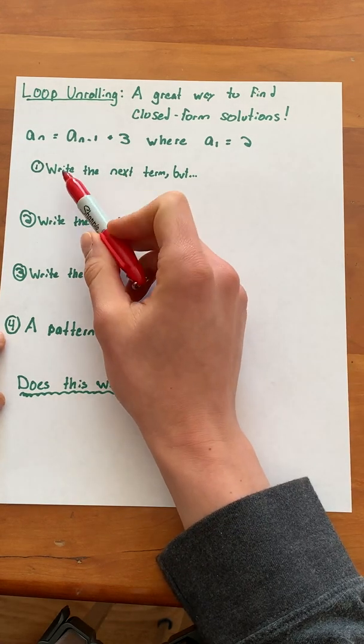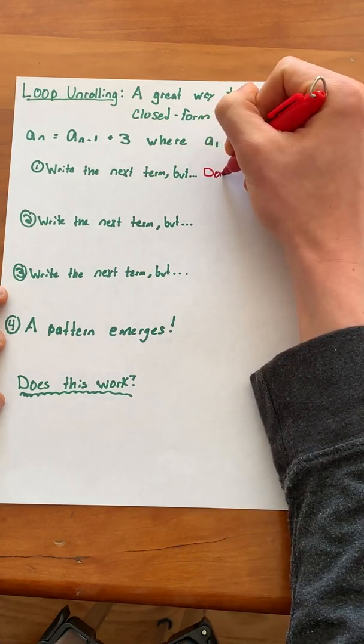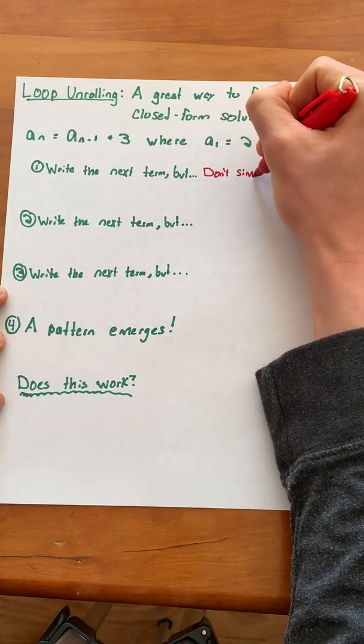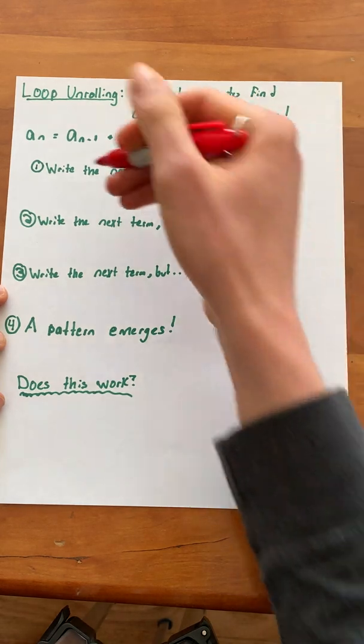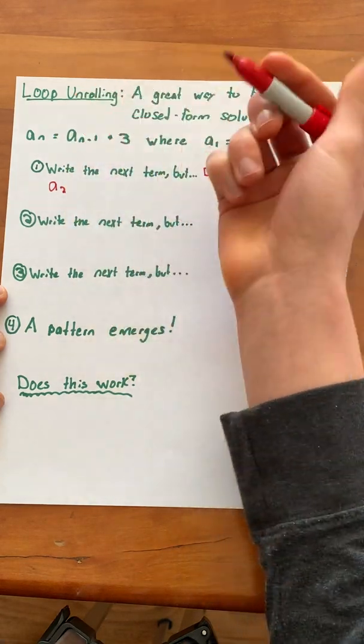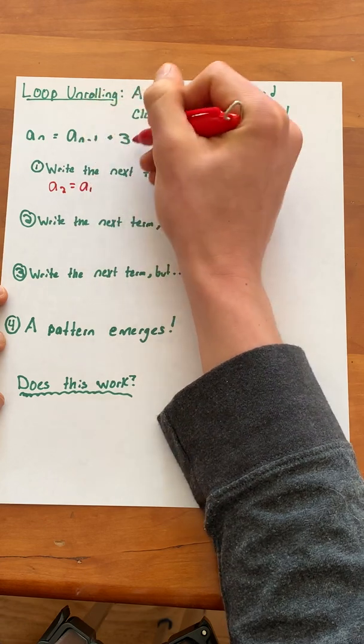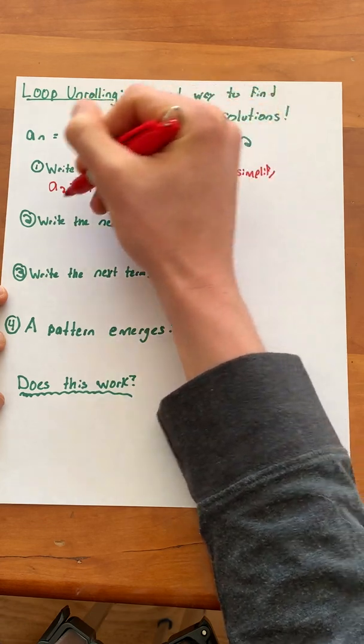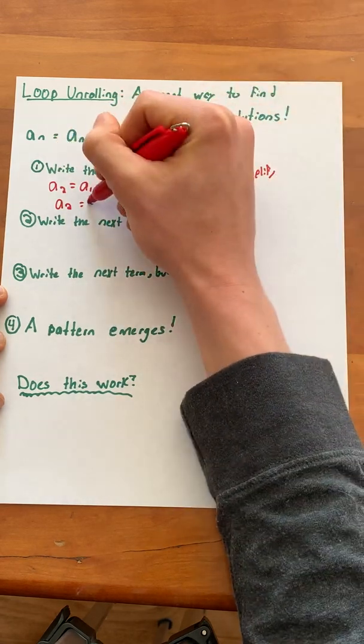Our first step is going to be to write the next term but don't simplify. You'll come to see why this is important. So we've been given a of 1, so we want to write that a of 2 equals a of n minus 1, which is a of 1 plus 3. That is to say a of 2 equals 2 plus 3.